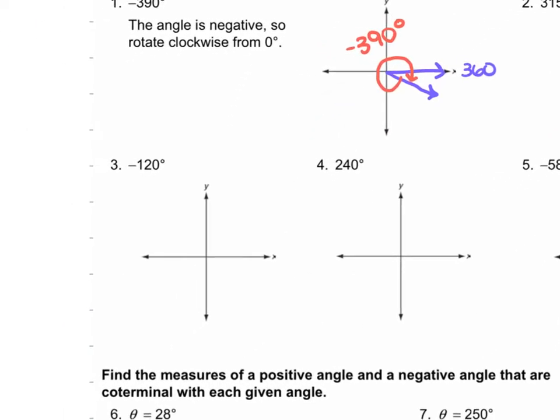For number 3, you have negative 120 degrees, so we are going to draw our initial side here. Then that negative 120 — we're going to go up to 90. And we have 180, so that 120 is going to be about here.